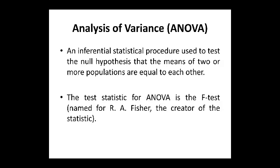ANOVA is an inferential statistical procedure used to test the null hypothesis that the means of two or more populations are equal to each other. The null hypothesis states that the means of two or more groups of the population considered for our study are equal, whereas the alternate hypothesis states that either of the groups of the population is not equal.